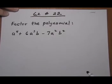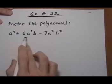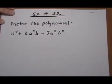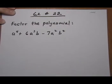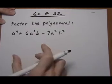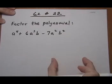6.2 number 22. Factor the polynomial. Now this polynomial has three terms so it's a trinomial, and that means we're going to want to do trinomial factoring. So we're going to have two binomial factors if it's factorable.